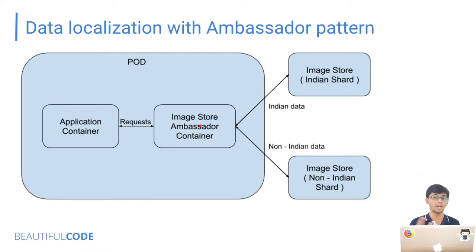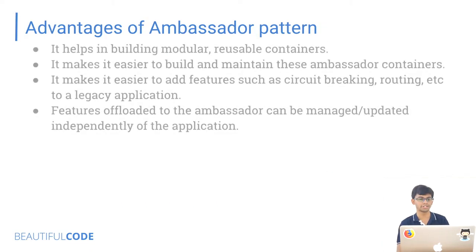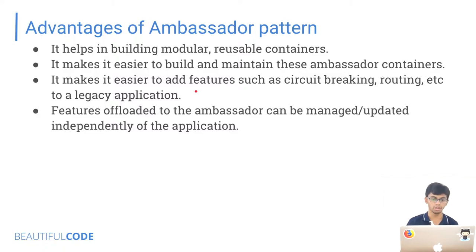The advantage here is that each pod has its own image store ambassador container, so no single pod is getting overloaded with requests. If the Indian shard is down, your image store ambassador container can still have logic to serve non-Indian content to users. Advantages of ambassador pattern: it helps in building more modular and reusable containers, makes it easier to build and maintain ambassador containers, makes it easier to add features such as circuit breaking and routing to a legacy application. Features offloaded to the ambassador can be managed or updated independently of the application.